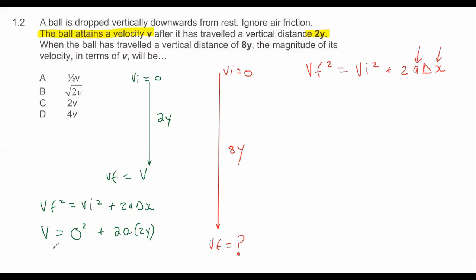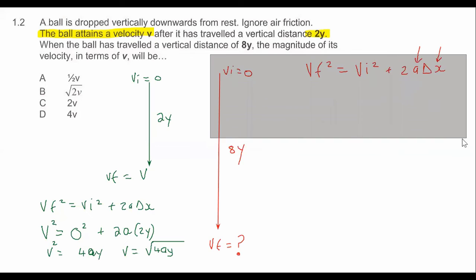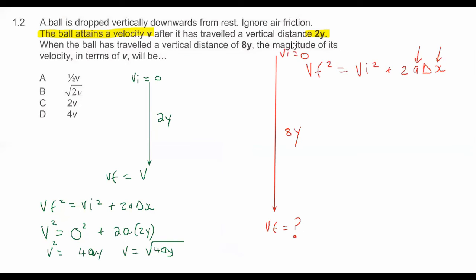Simplifying: V squared equals 0 plus 2 × A × 2y, which gives 4AY. So V squared equals 4AY. Taking the square root, V equals the square root of 4AY. Since the square root of 4 is 2, V equals 2 times the square root of AY.